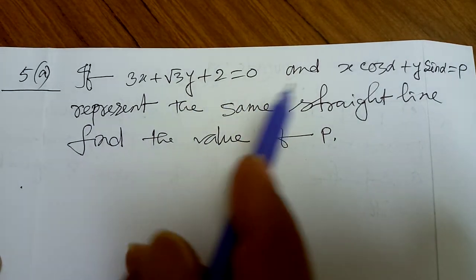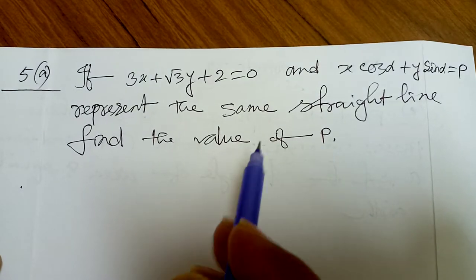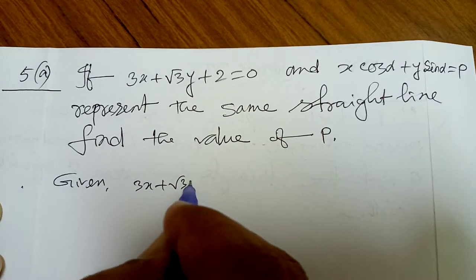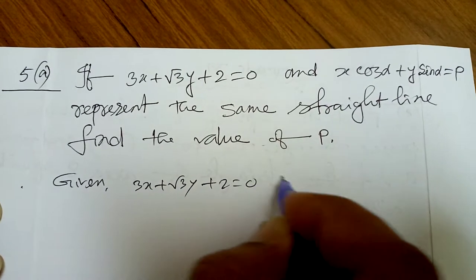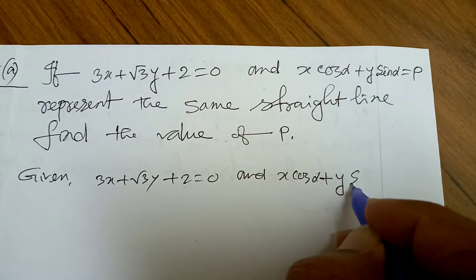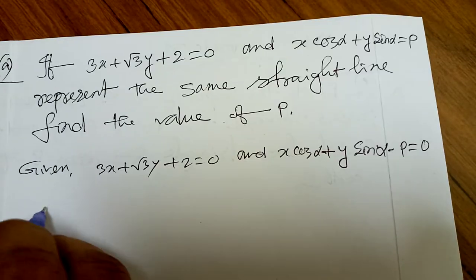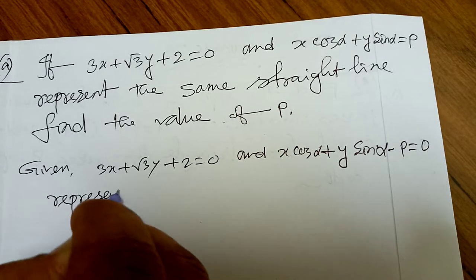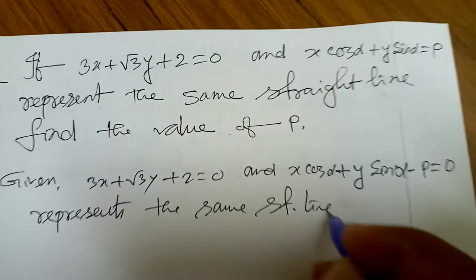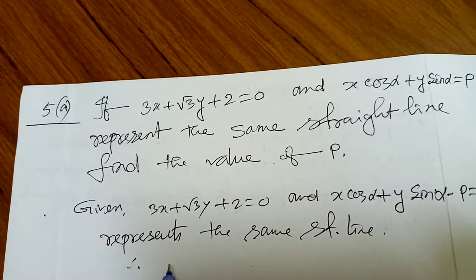Question 5a: Two straight lines represent the same line — find the value of p. Given: 3x + √3y + 2 = 0 and x·cosα + y·sinα − p = 0 represent the same straight line. So the coefficient of x, coefficient of y, and constant must be in proportion.